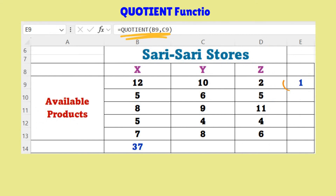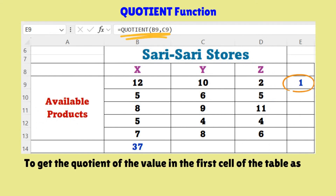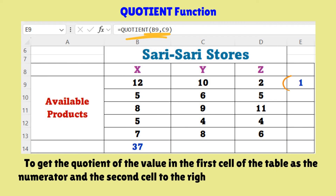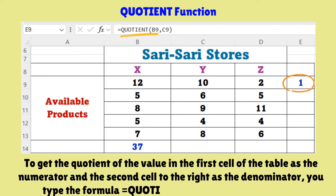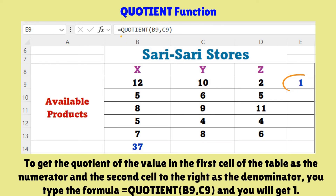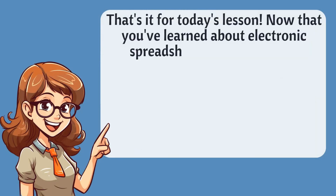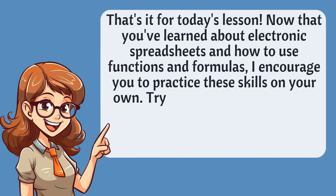For the QUOTIENT function, to get the quotient of the value in the first cell as the numerator and the second cell to the right as the denominator, you type the formula =QUOTIENT(B9,C9), and you will get 1. As easy as that.